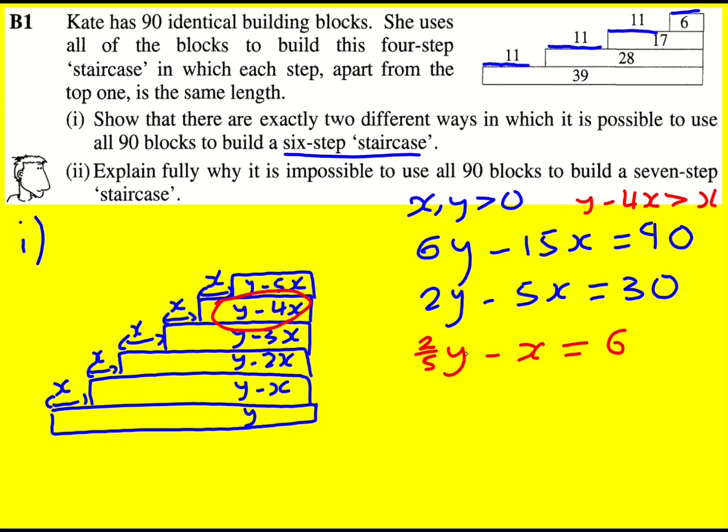So when I divide through by 5, what I see is that y is going to have to be a multiple of 5 to get any solutions, because x is a whole number, 6 is a whole number. So for this to be a whole number, y must be 5 or 10 or 15 and so on. Remember, it has to be greater than zero.